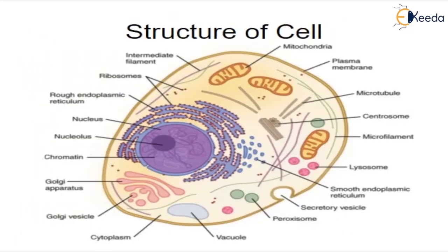Here I have shown you the diagram of a cell. It includes different cell components such as mitochondria, plasma membrane, microtubule, centrosome, microfilament, lysosome, smooth endoplasmic reticulum, secretory vesicle, peroxisome, vacuole, cytoplasm, Golgi vessel, Golgi apparatus, chromatin, nucleolus, nucleus, rough endoplasmic reticulum, ribosomes, and intermediate filament.